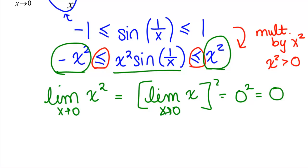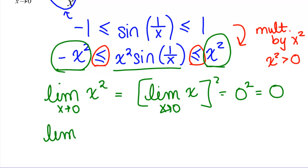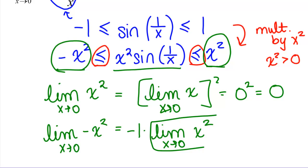And if we do the same thing for the limit as x goes to 0 of negative x squared, first we can pull that constant out, negative 1, times the limit as x goes to 0 of x squared. And this limit we just found, so we know that's 0, so negative 1 times 0, which is also 0. So the important part here is that we found that the limit of the function that's bigger and the limit of the function that's smaller, here these are exactly the same.